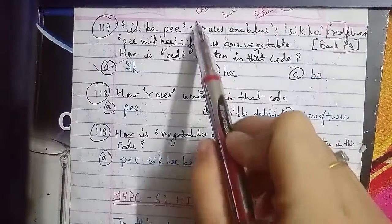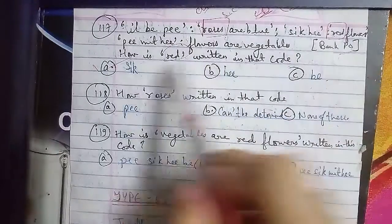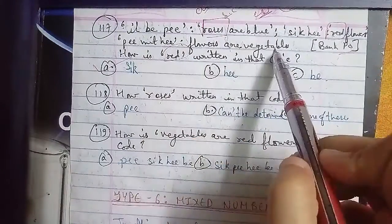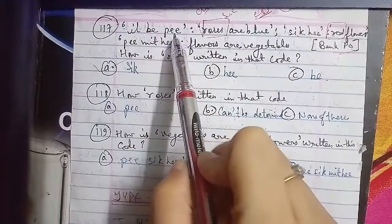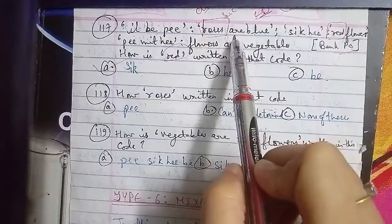So roses will be either il or b or p. Let's see: are or blue will get a coding. We can find are, but roses we can't determine from here.